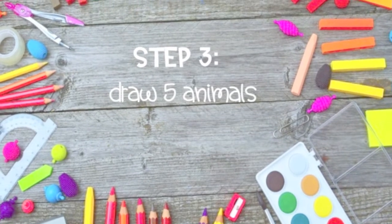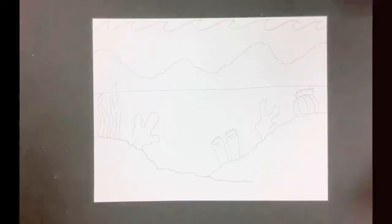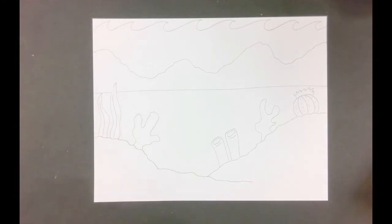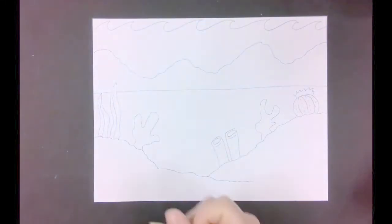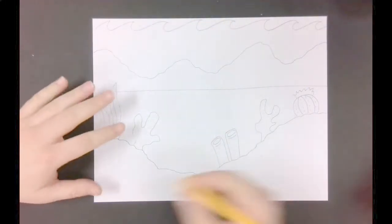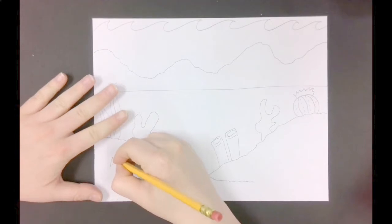Now we need five animals. Using your pencil draw five animals somewhere in your scene. They could be sitting on the rocks, they could be on the ground of the sand, or swimming in the sea.